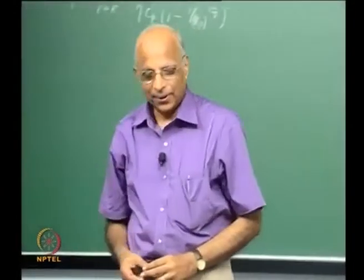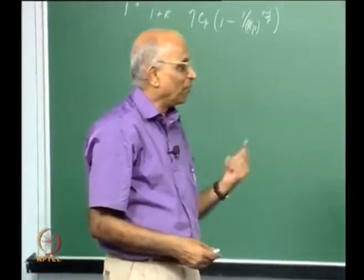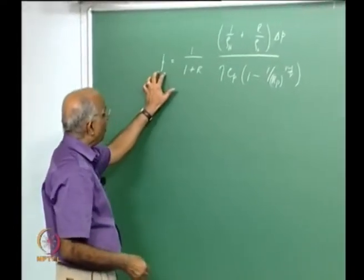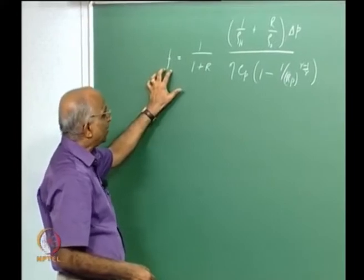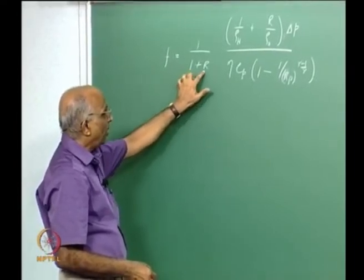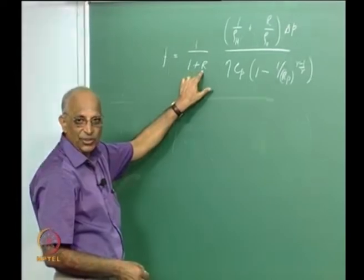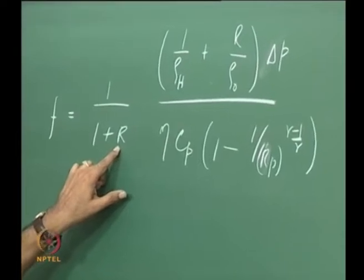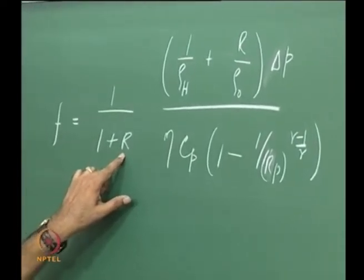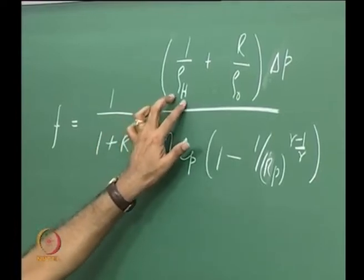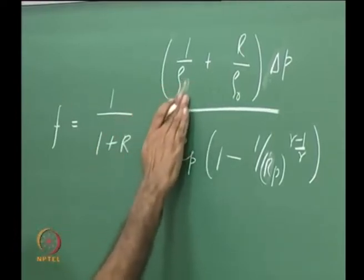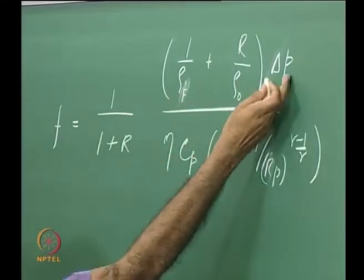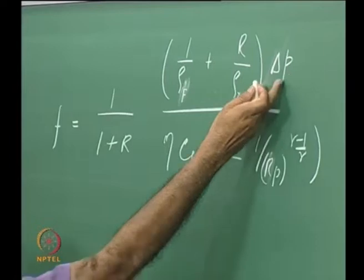Good afternoon. I think we will get started with what we were doing in the last class. In the last class we derived an expression for the fraction of the total propellant flow into the gas generator, which is equal to 1 plus 1 over R. R was the overall mixture ratio — that means, from the tank, whatever oxidizer is being supplied to the fuel was R. We also had the density of the fuel rho_F, the density of the oxidizer rho_0, and the pressure increase across the pump delta P.